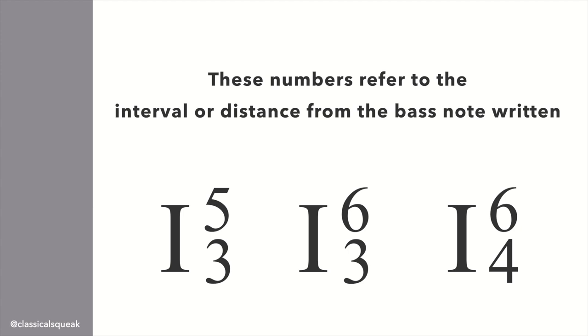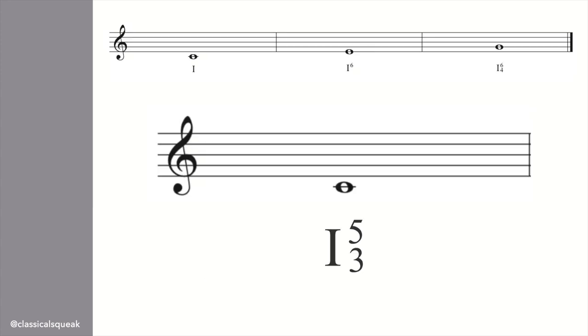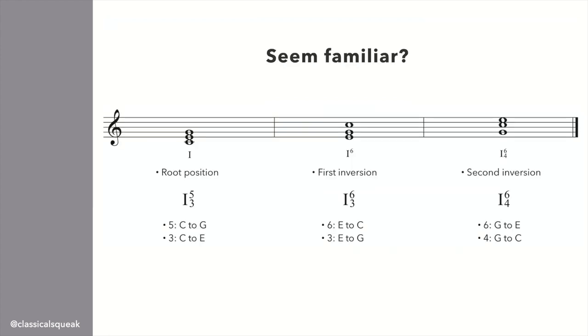These numbers refer to the interval or distance from the bass note written. All we have to do is take your bass note, so C, and count up 3, which is E. C, counting up 5, is G. Next we have E as the bass. We count up 3 from E as G. And 6 from E is C. Last one, the bass is G. We count up 4, is C. And up 6 from G, is E. Seem familiar? All we're doing here is writing out the inversions that you've probably already played before, but using different notation.